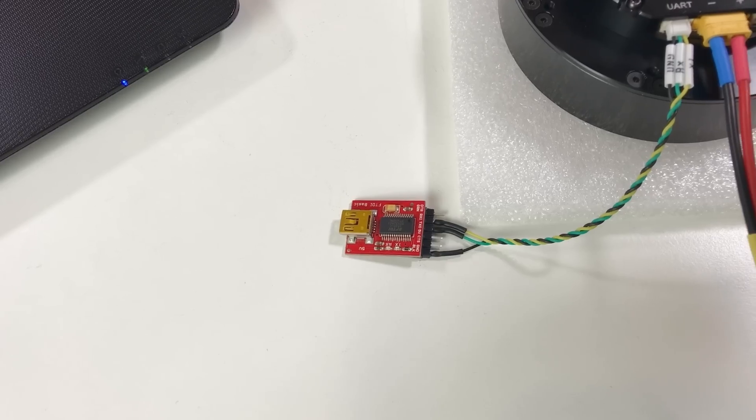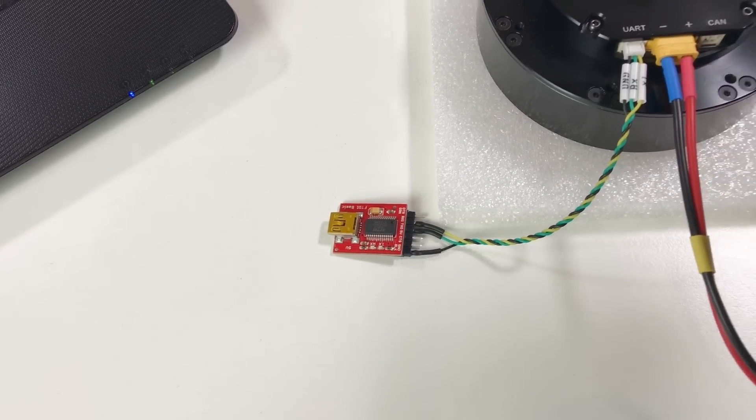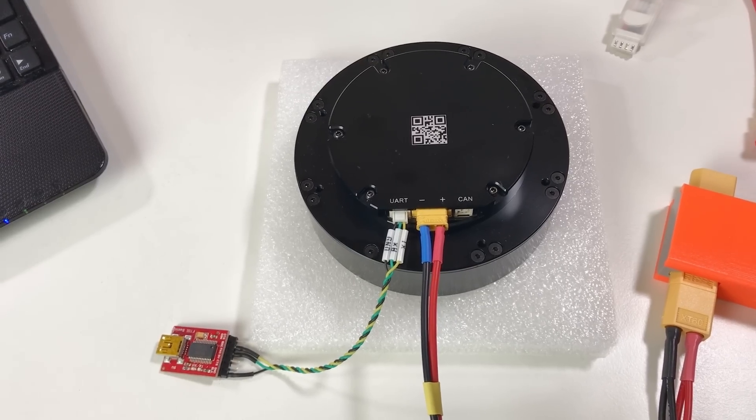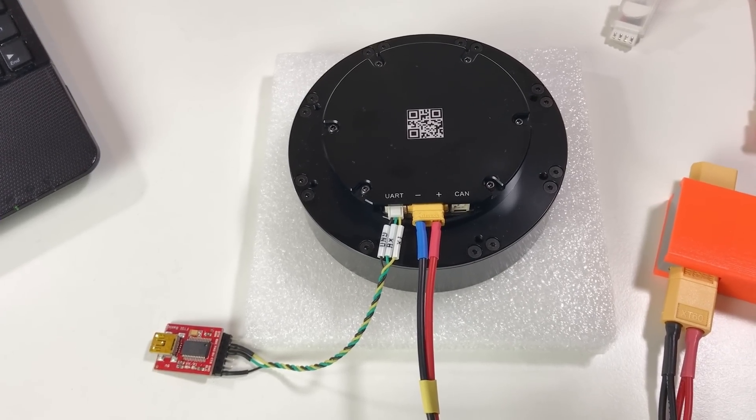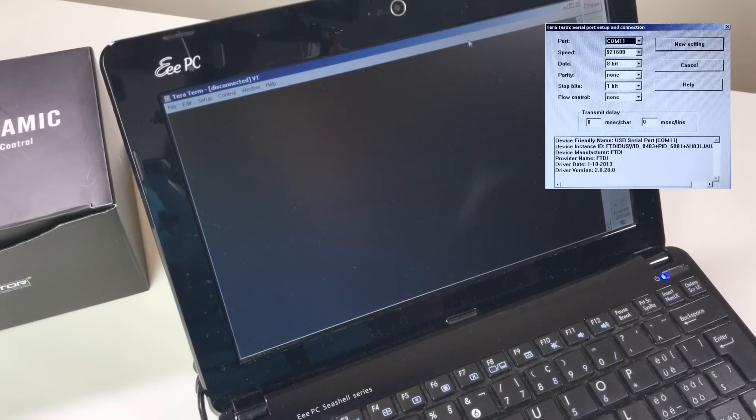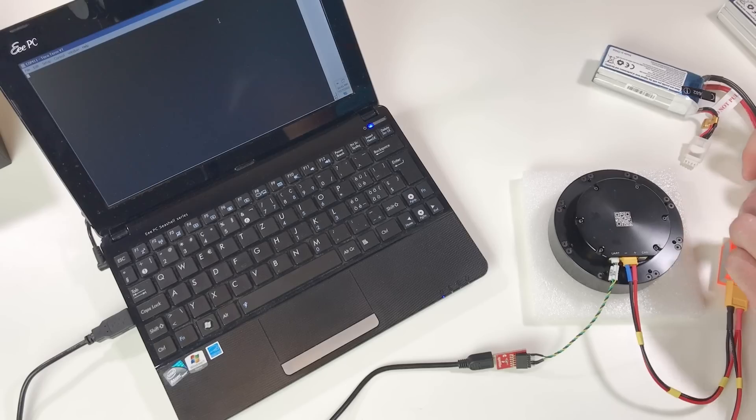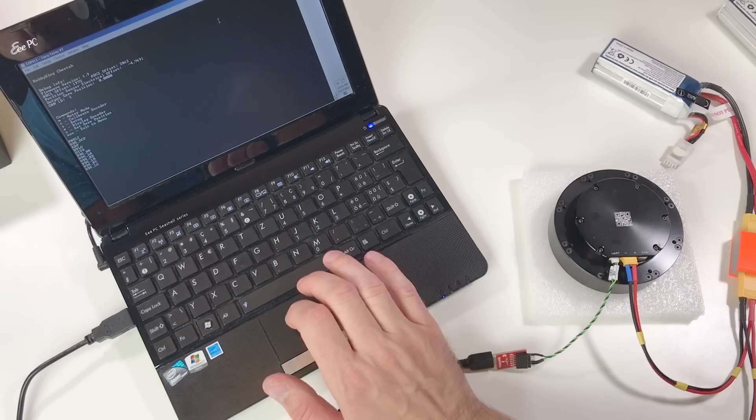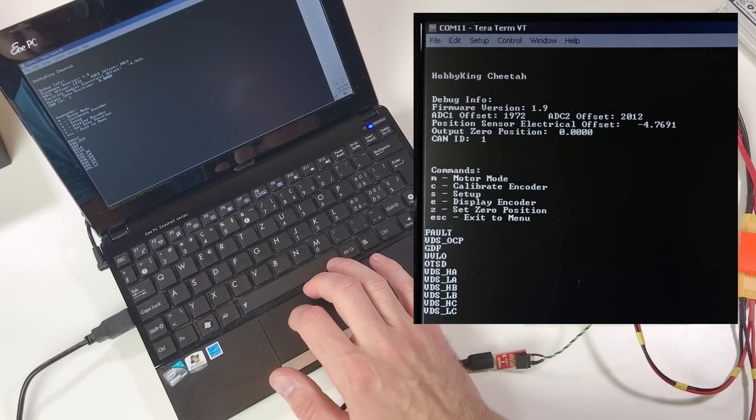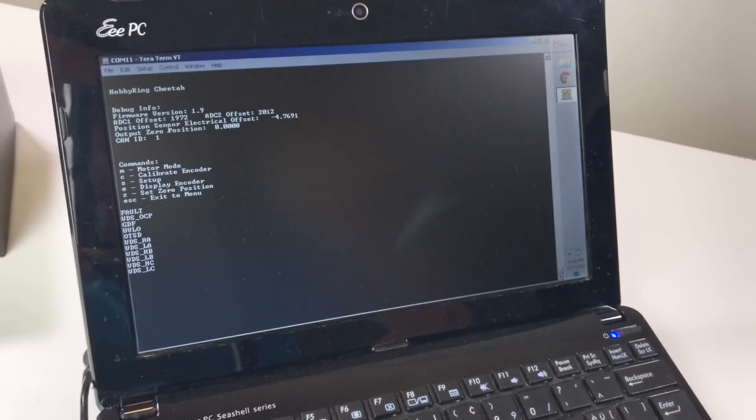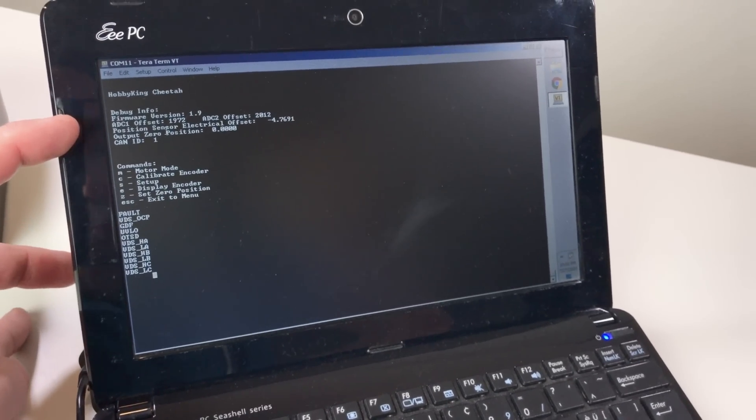In order to read the serial, I'm going to use this tiny FTDI board. This is how it's connected, so you see where is the ground, receiver, and transmitter. I'm going to use TerraTerm serial terminal. Power supply for the actuator. And immediately we have here the parameters. First of all, we see that firmware version is 1.9.